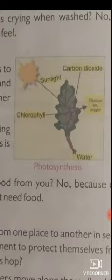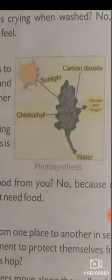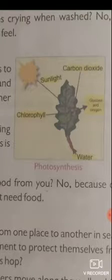Plants make their own food by using air, water, and sunlight — we call this process photosynthesis. In the picture, a plant catches and eats insects — this plant gets its food by eating insects. This is how plants also obtain their food.